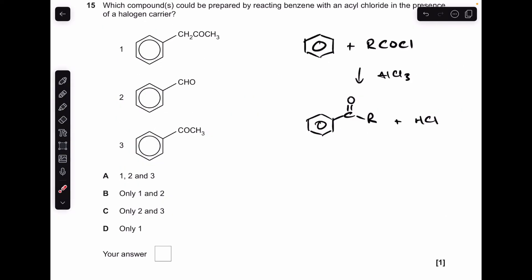And finally, question 15. Just going to quickly run through the reaction between benzene and an acyl chloride. I'm just representing that as RCOCl with an AlCl3 catalyst. The important thing is that the C=O part is bonded directly to the benzene ring. So we're looking for that in the structures of these three products.